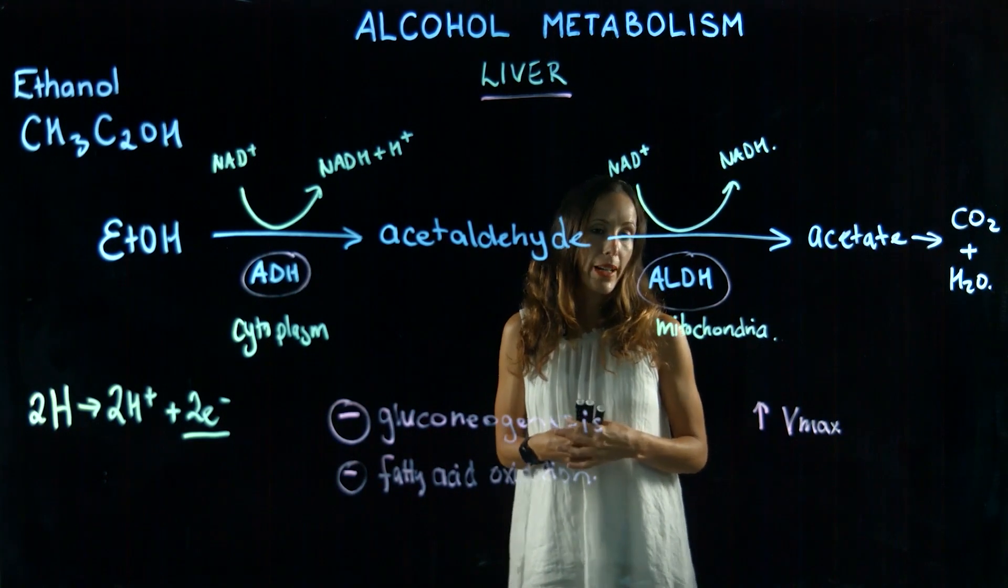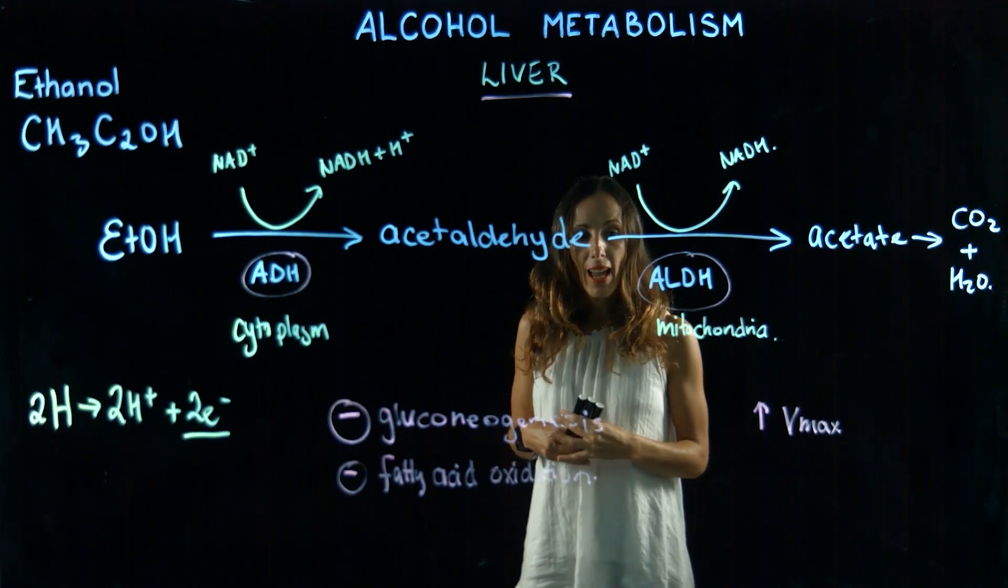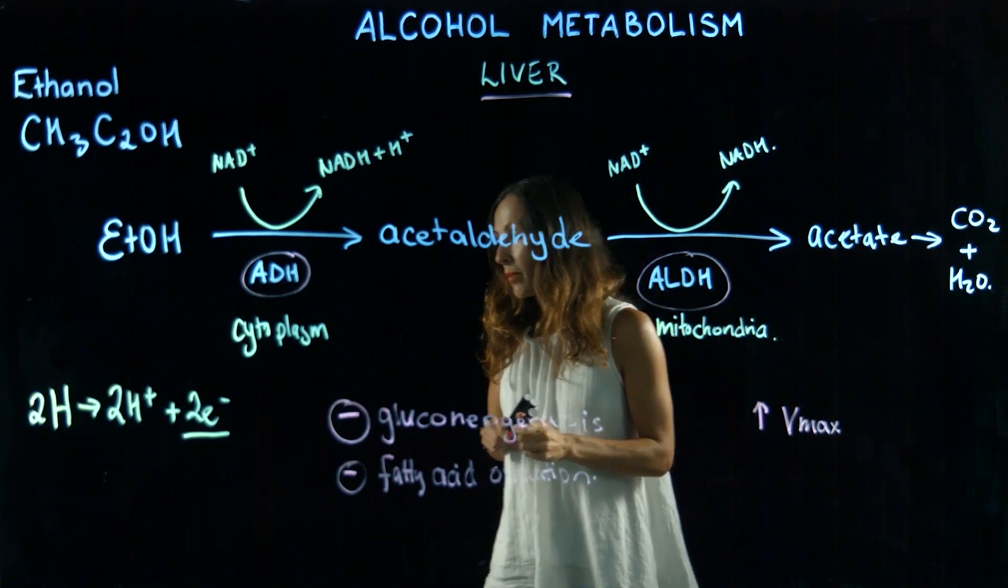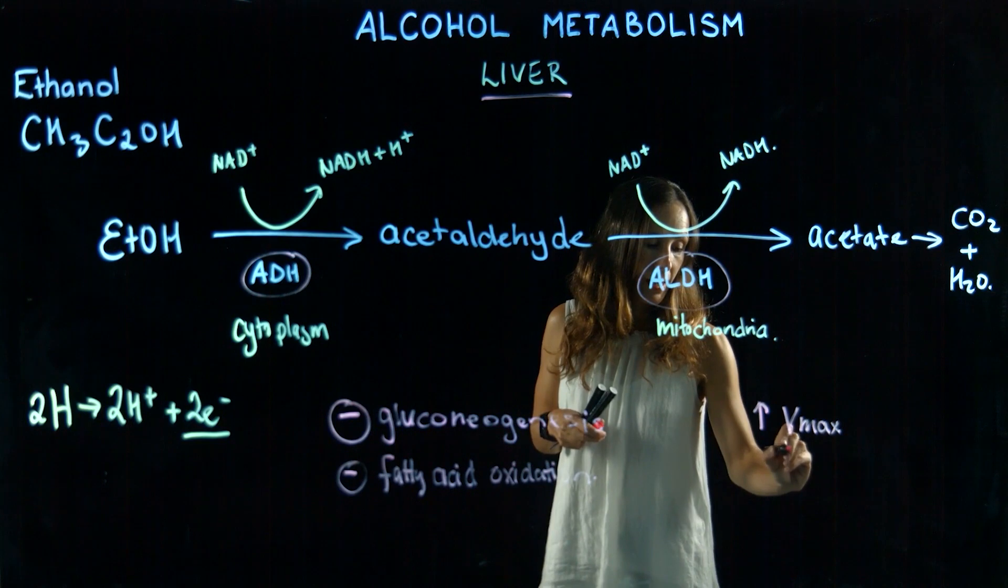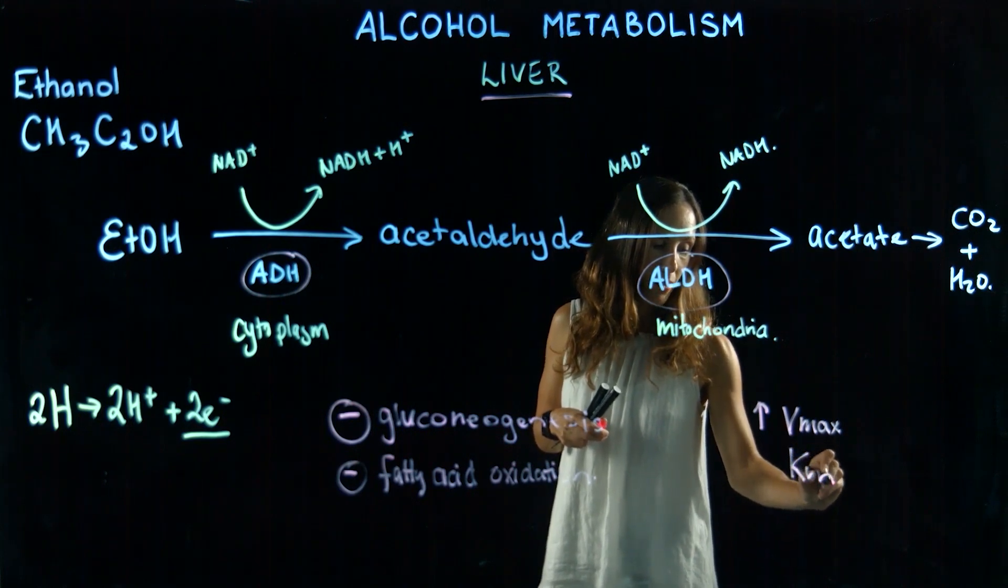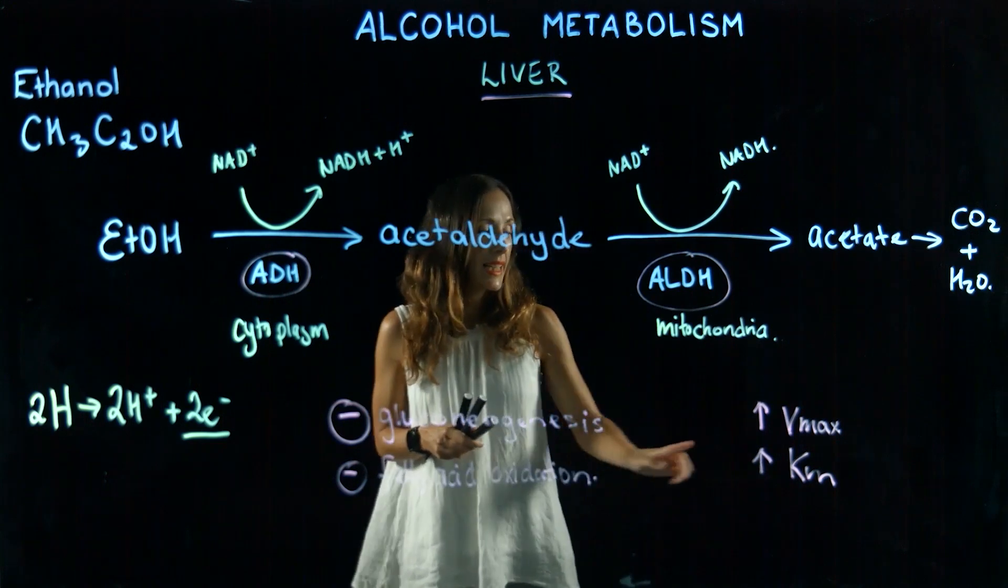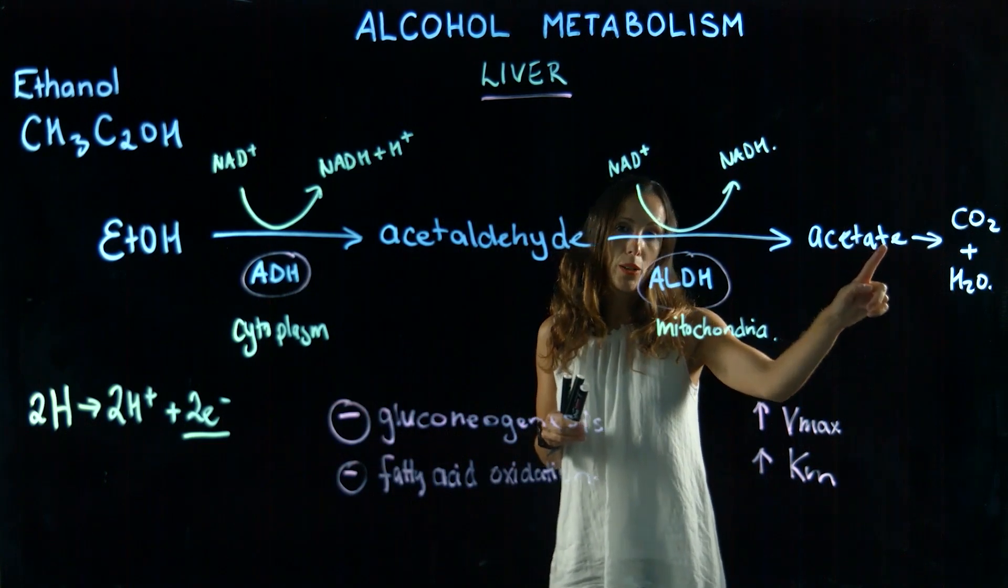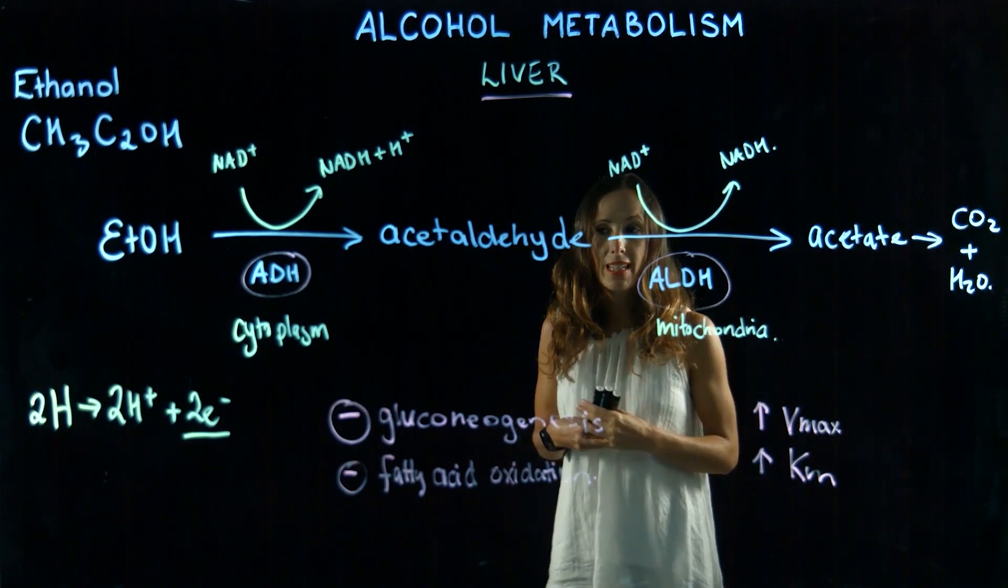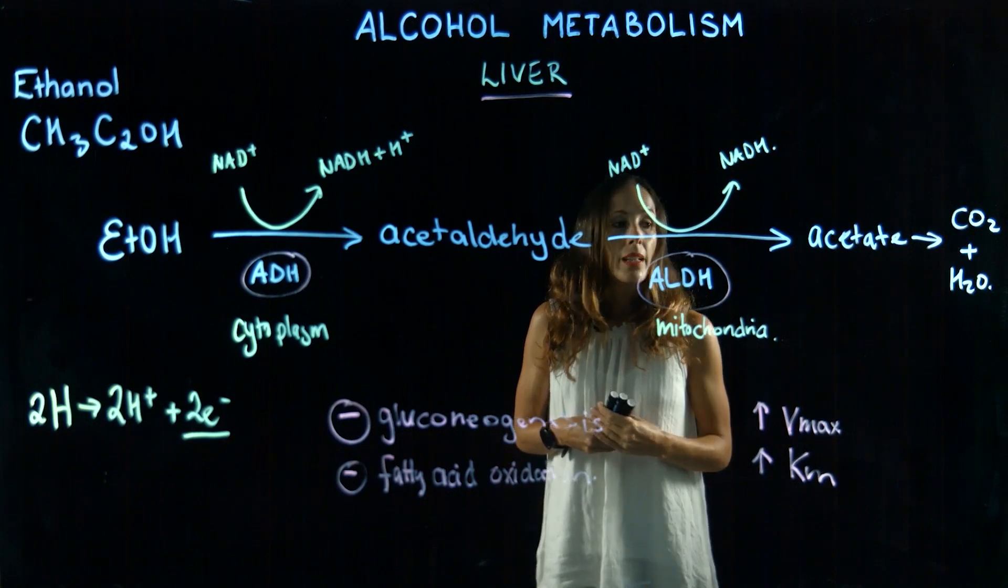There's another variant where we have a mutation in ALDH, and this means that the enzyme has a different Km, an increased Km. That means it needs a higher concentration of the substrate in order to obtain significant catalysis, so a higher concentration of acetaldehyde.